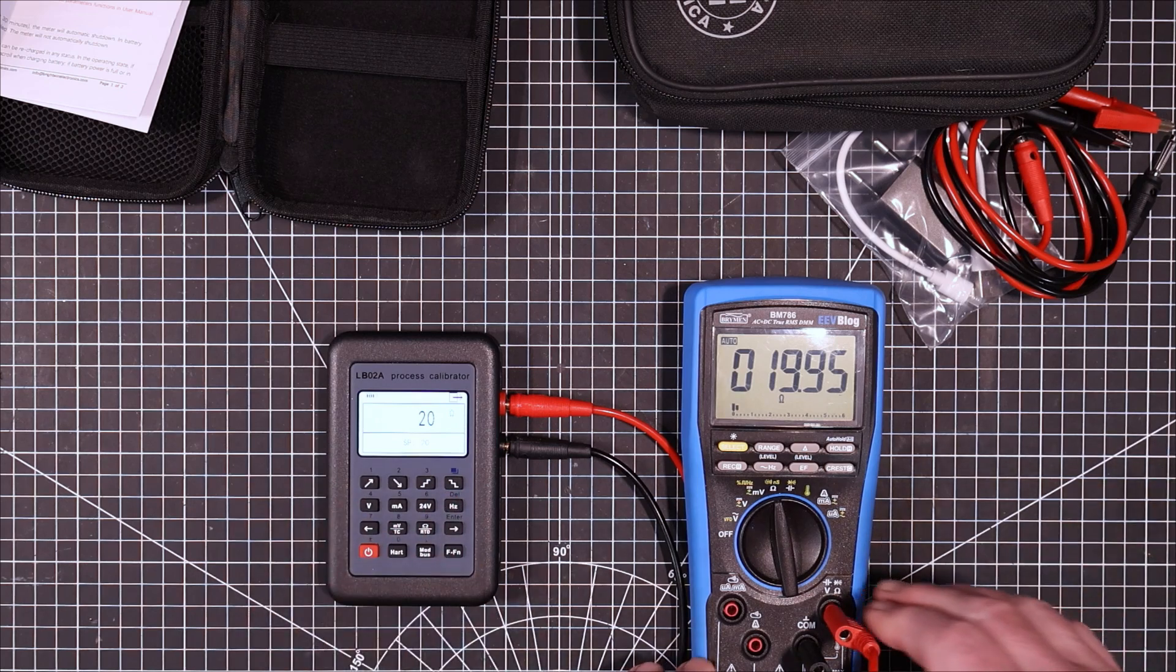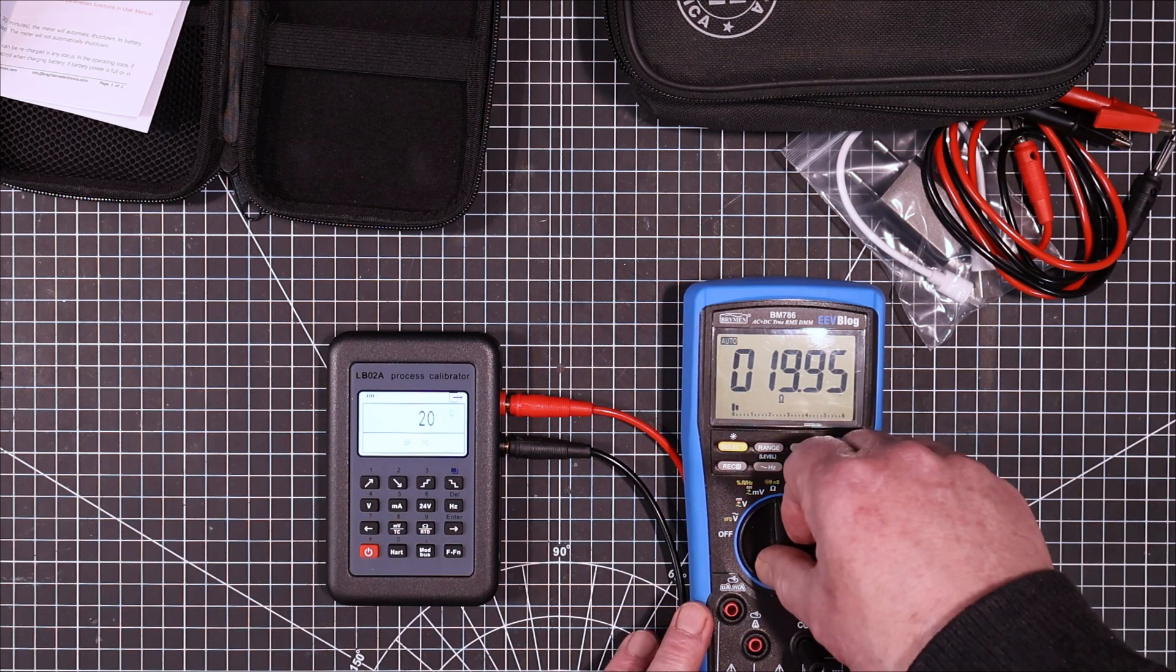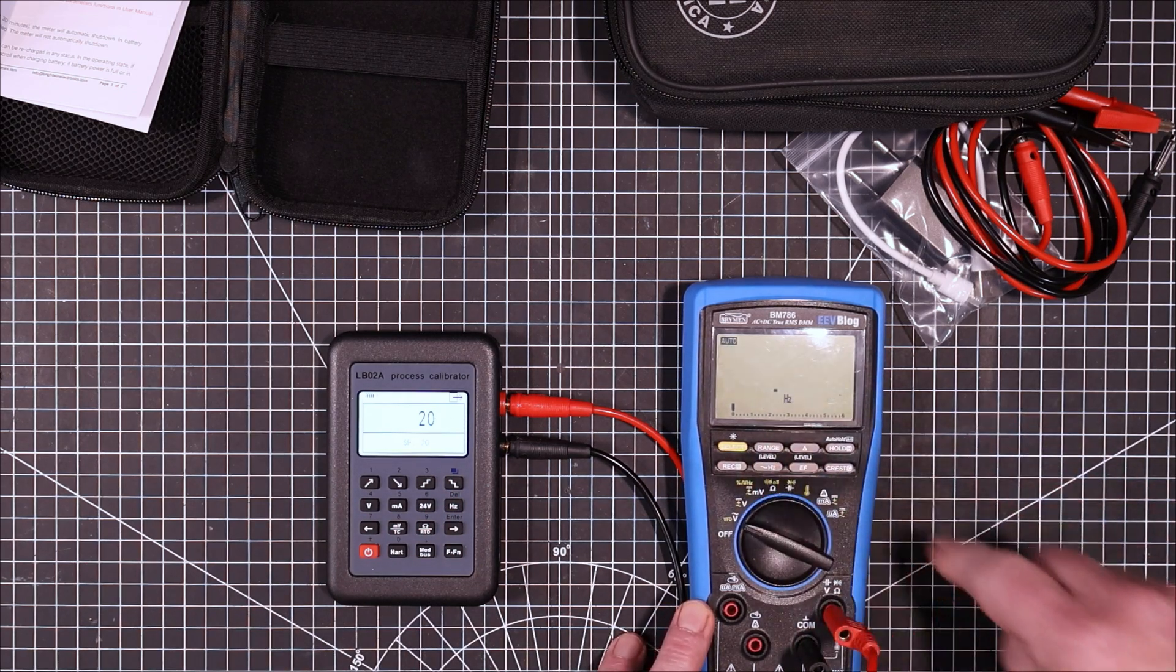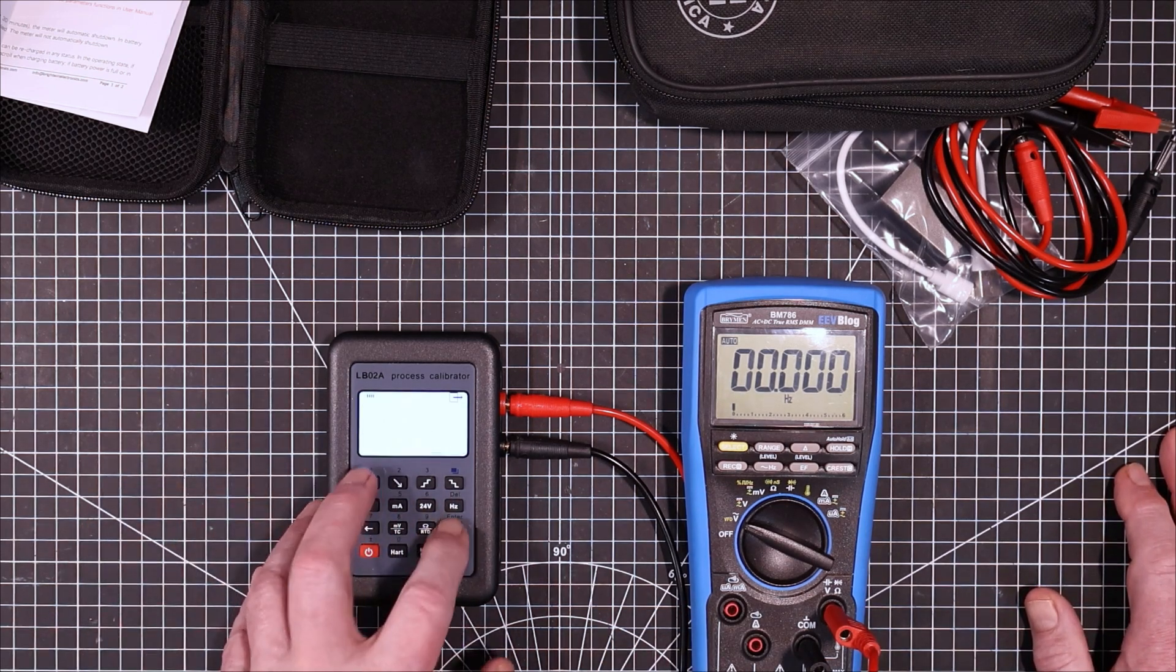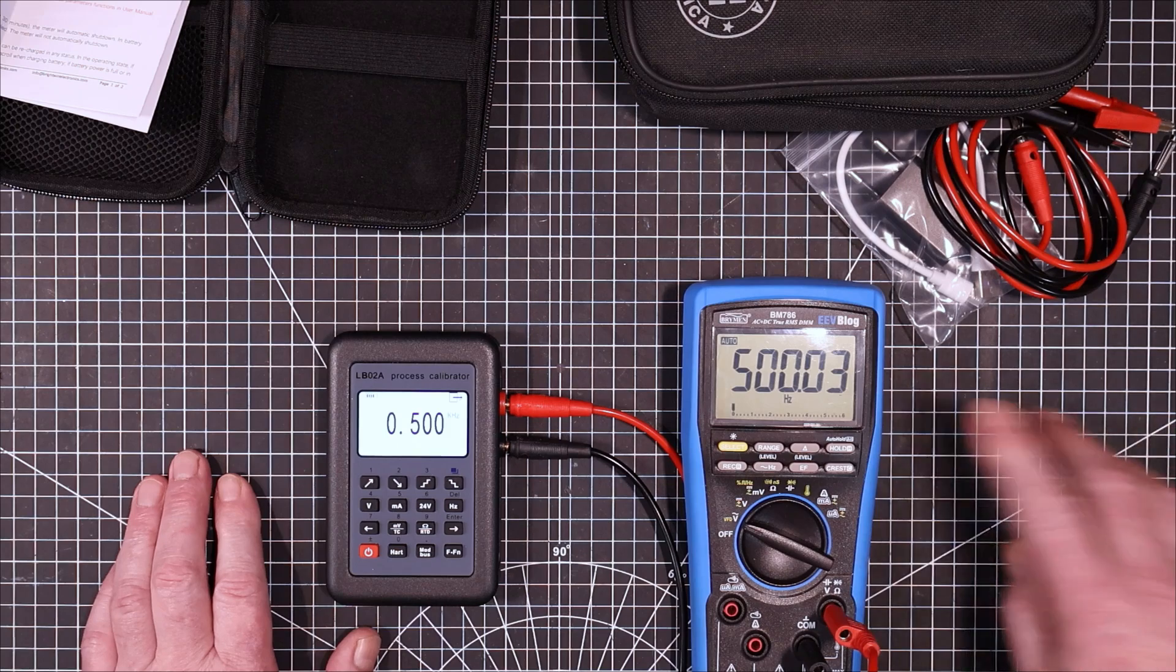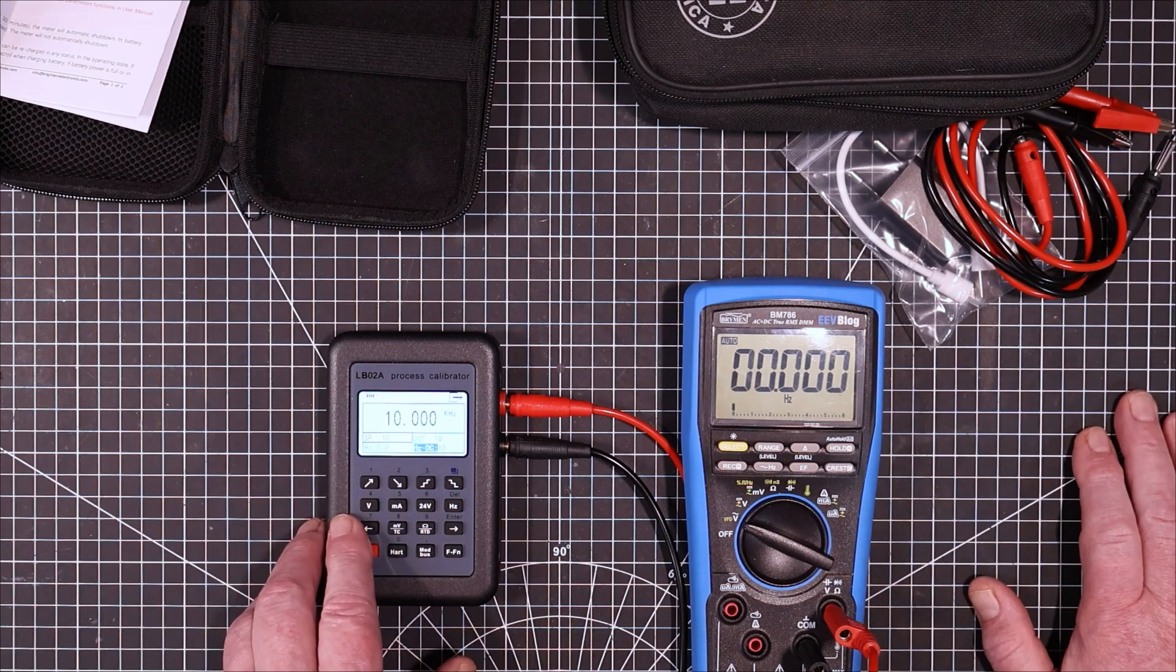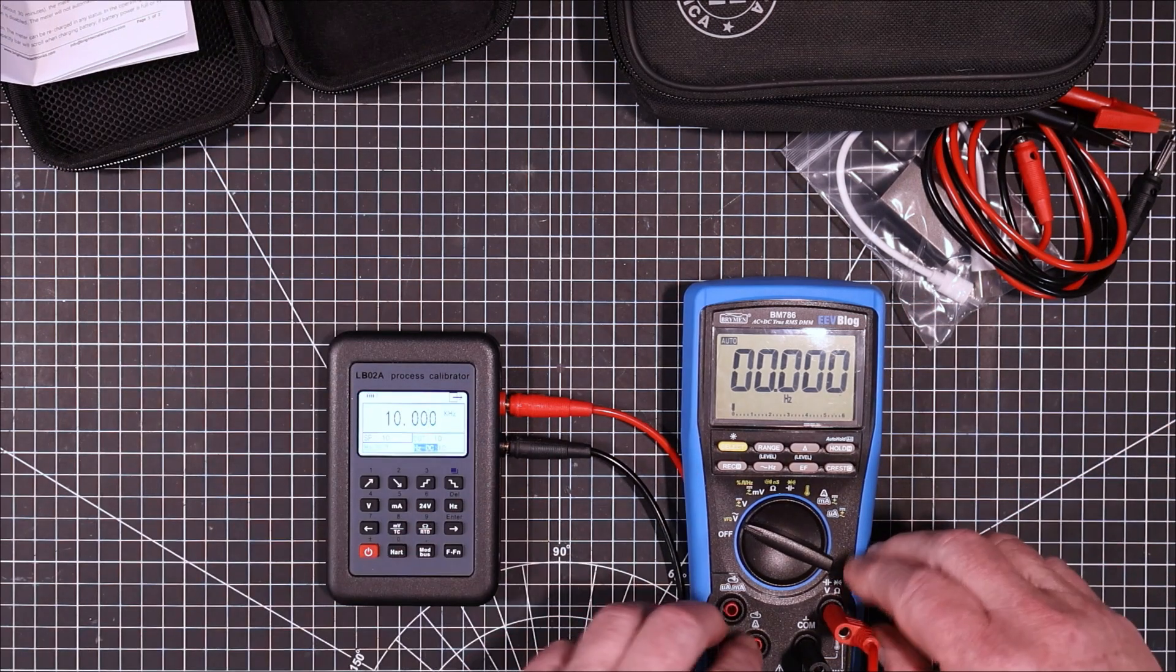It's got also frequency outputs. So let's just put this down here. Click on hertz. And put this into hertz mode. 500 hertz. Probably better to look at this under a scope. Yeah. Let me set up a scope here.